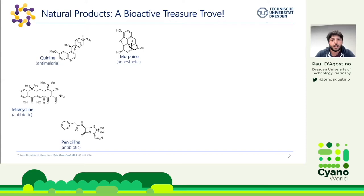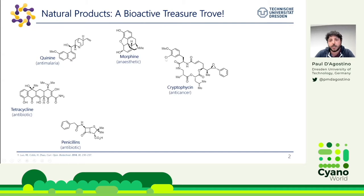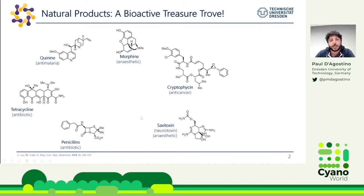Cyanobacteria also produce a range of varied natural products. For example, cryptophycin is an anti-cancer molecule. Saxitoxin, which is what I did my PhD on, is a neurotoxin, and hopefully one day might be able to be used as an anesthetic. Scytonemin is a UV-absorbing molecule. Or you can have molecules with similar structures, such as the ambiguines, but with different bioactivities.